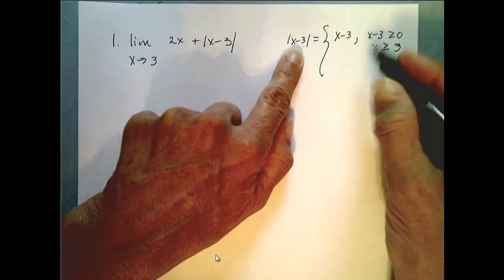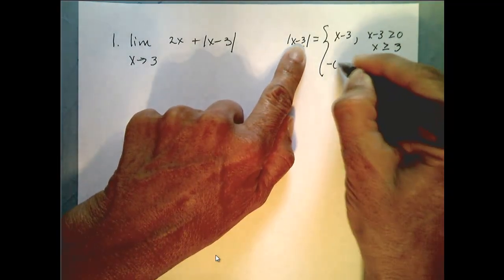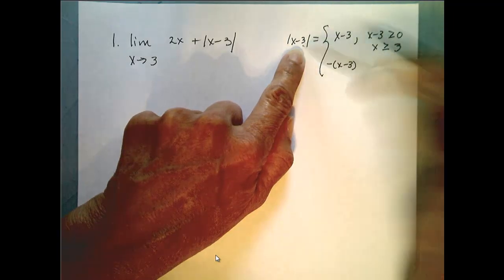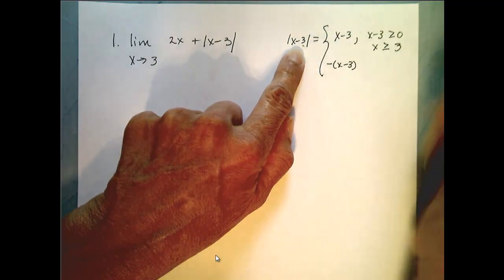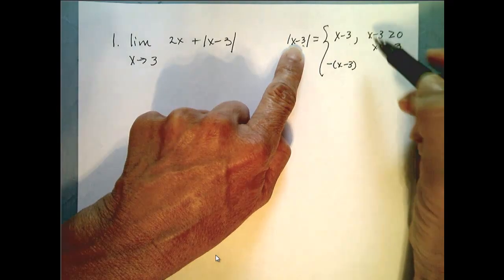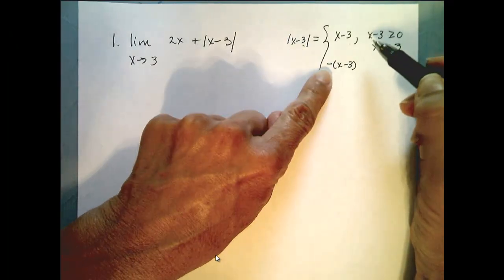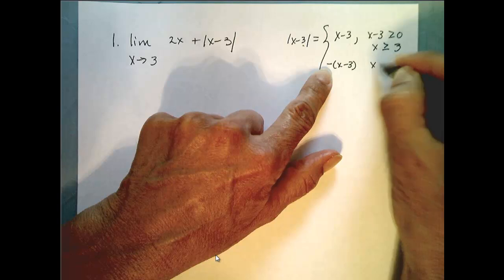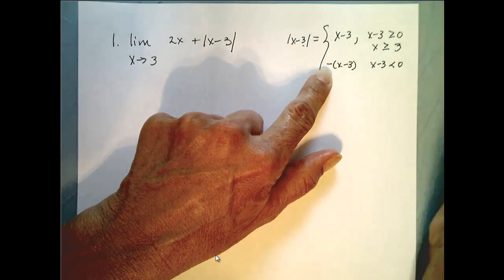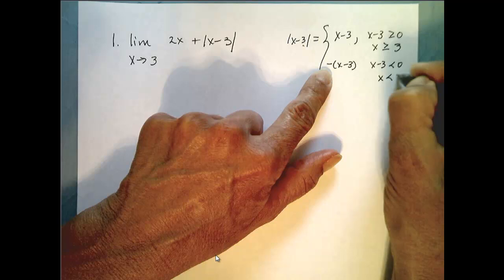The opposite of what is inside comes out if what's inside is negative. So the absolute value of x minus 3 equals the opposite of x minus 3 when x minus 3 is less than 0, which is true when x is less than 3.